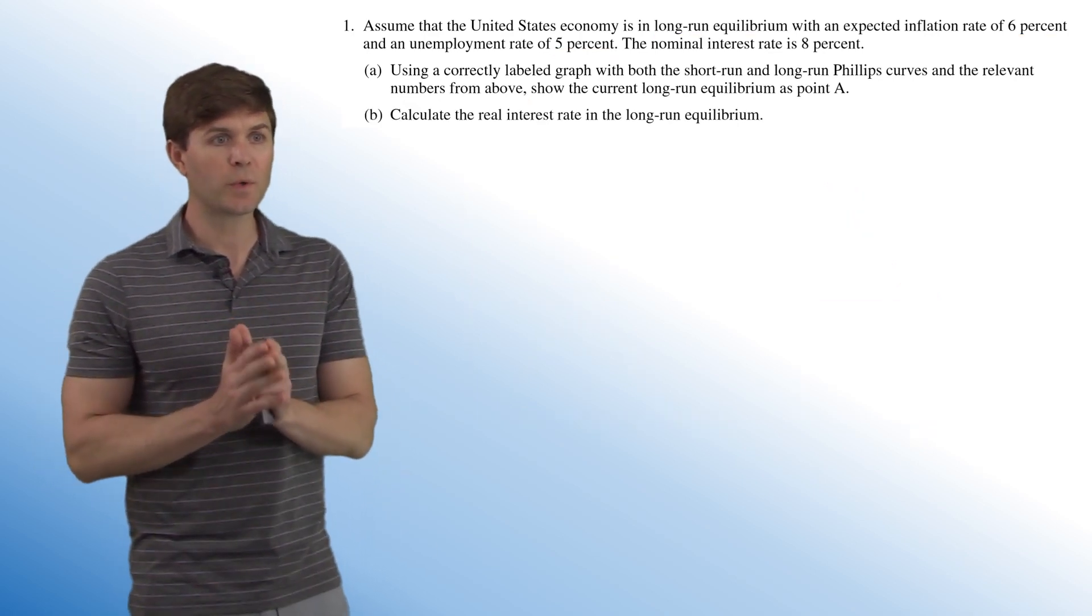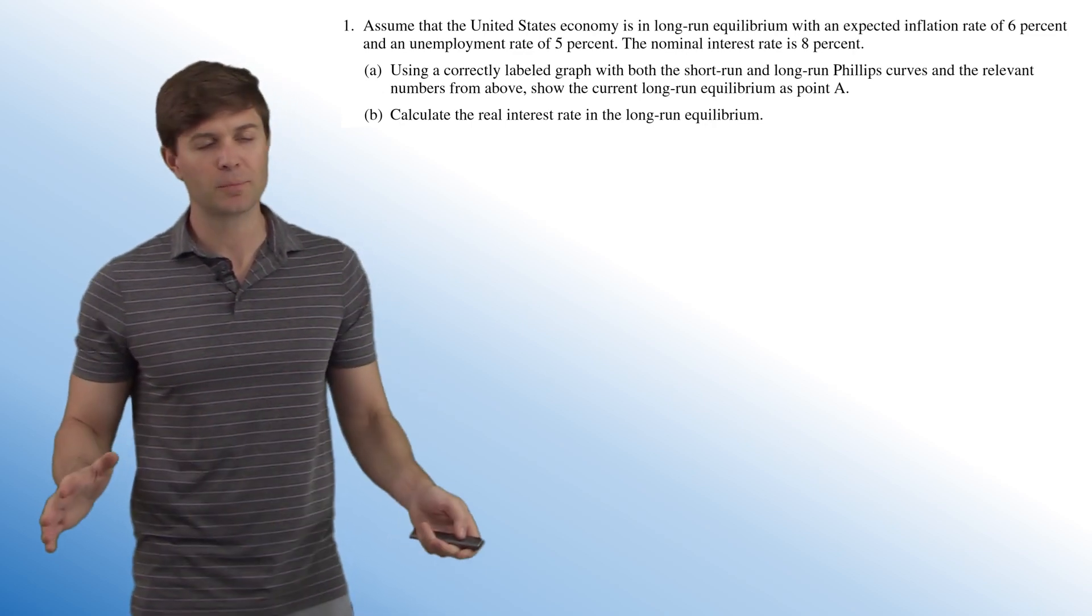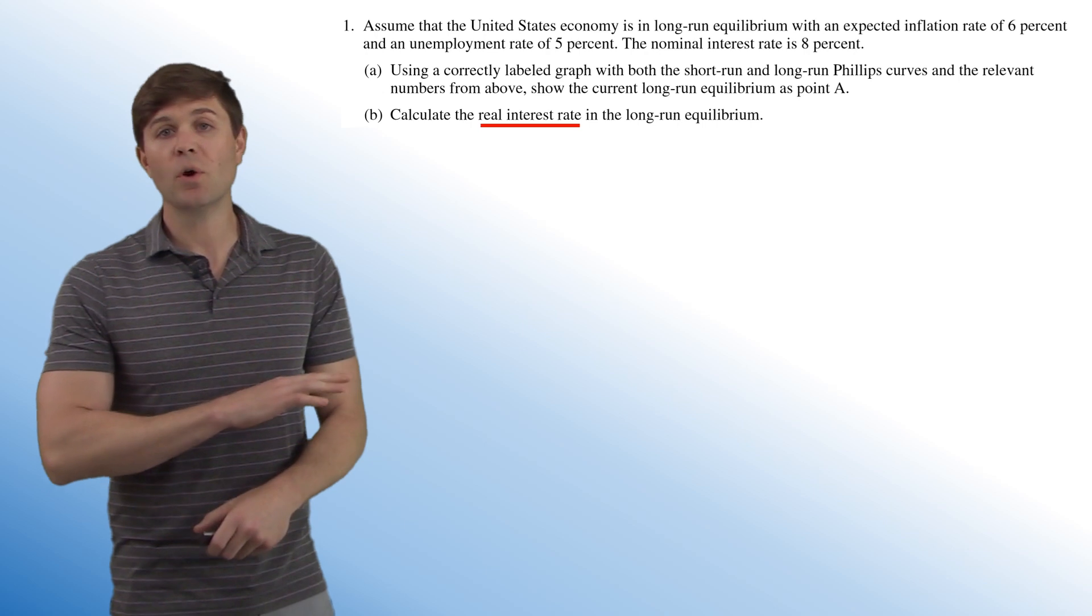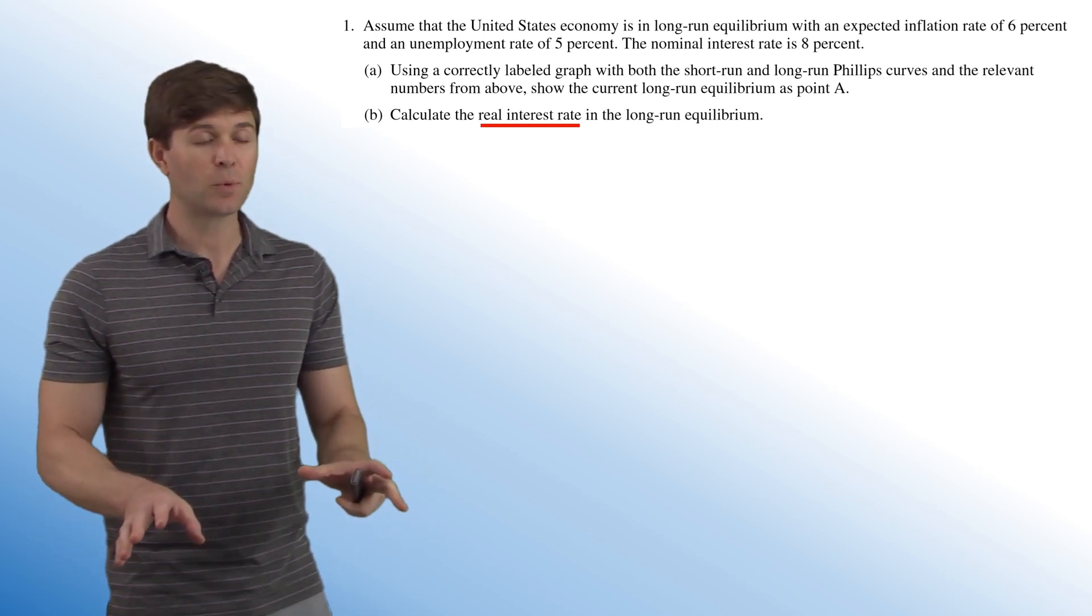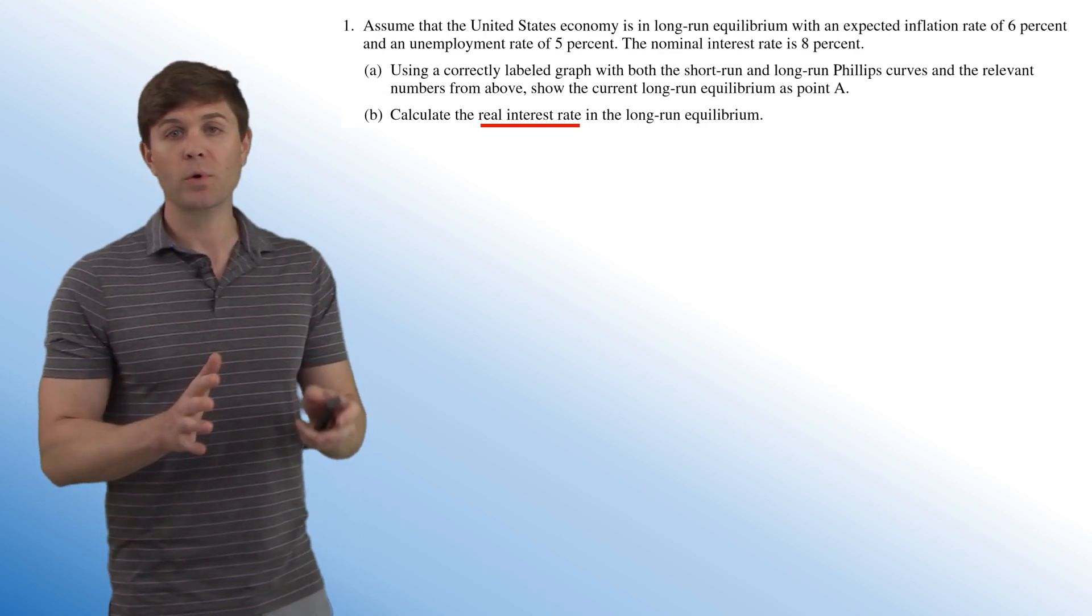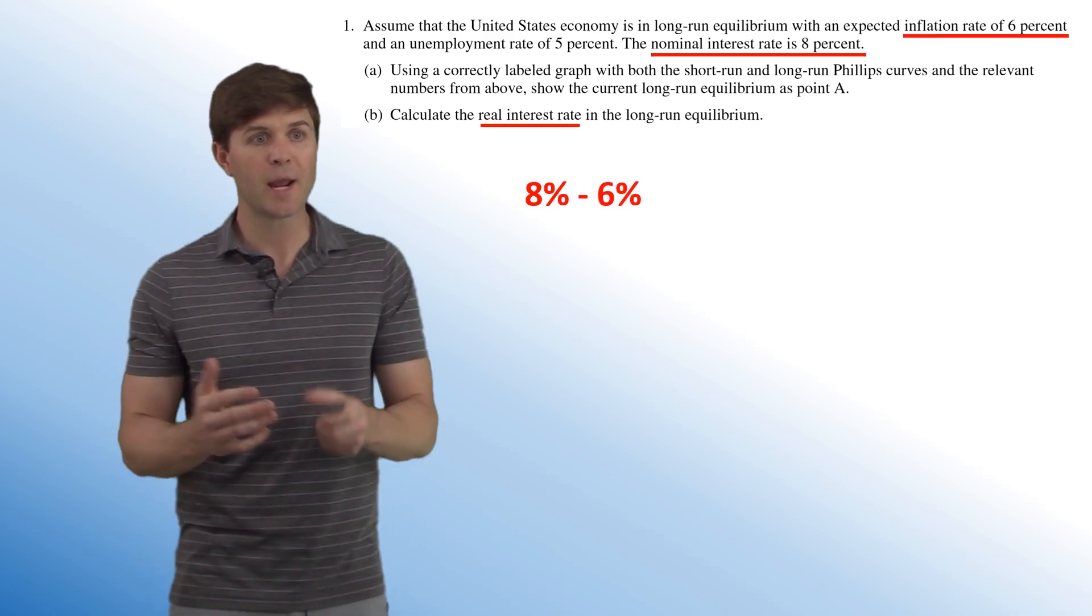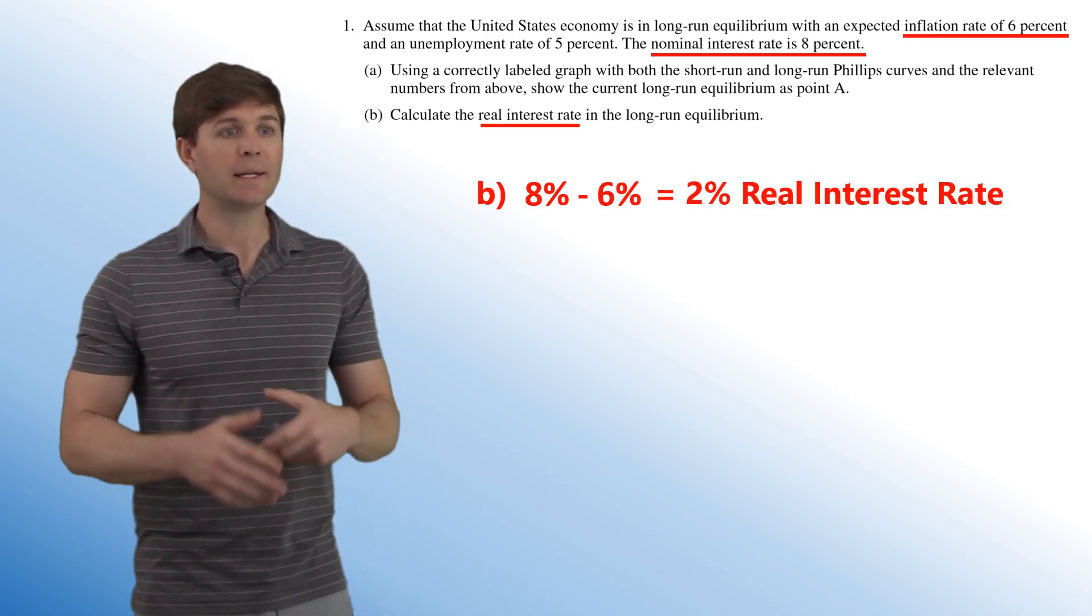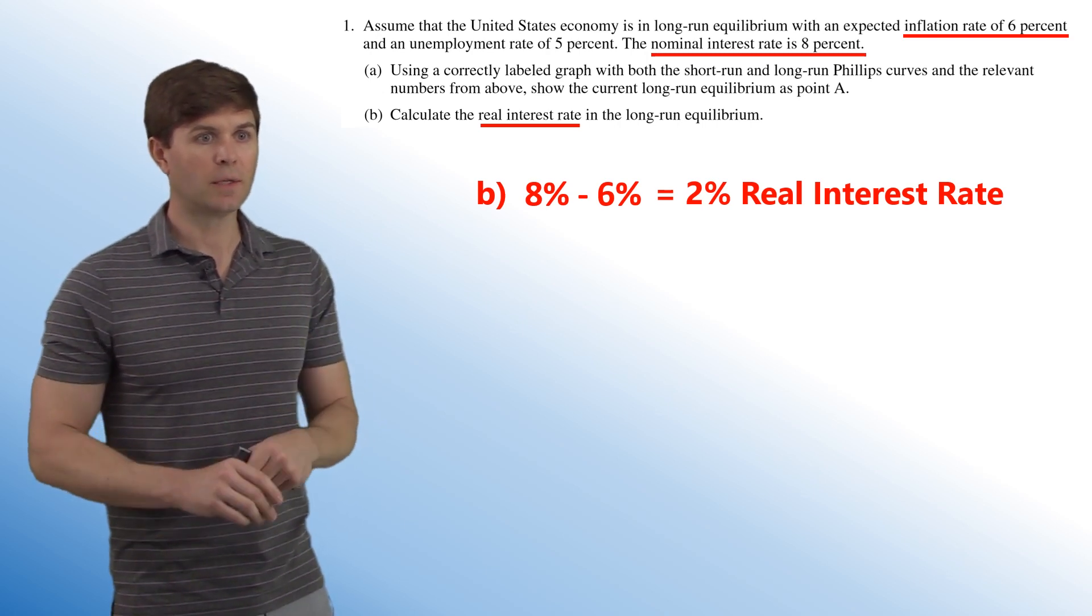Now part B, calculate the real interest rate in the long-run equilibrium. This one is a very simple point to get. We don't have any loanable funds models indicated anywhere in this question or the few models missing from this question. So we're going to get the real interest rate from taking our nominal interest rates, subtracting our inflation rate and ending up with 2% real inflation. So that's our real interest rate.